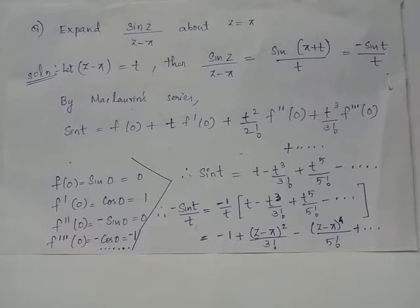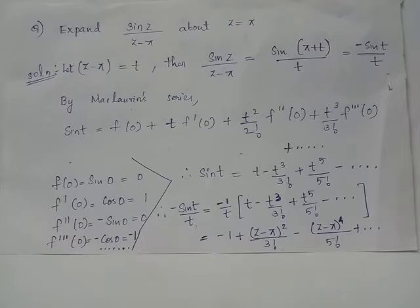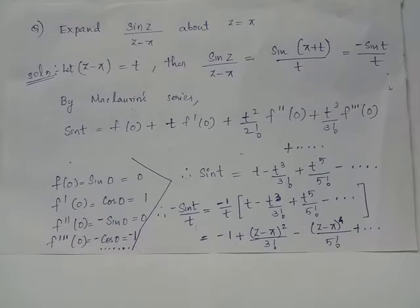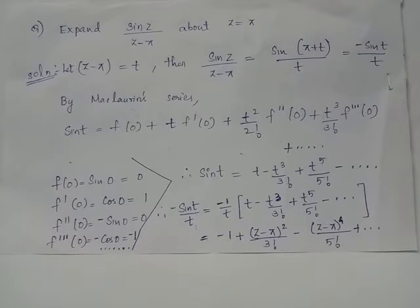For f(t) = sin(t): at t = 0, f(0) = sin(0) = 0. The derivative f'(t) = cos(t), so f'(0) = cos(0) = 1. Then f''(t) = -sin(t), so f''(0) = -sin(0) = 0. And f'''(t) = -cos(t), so f'''(0) = -cos(0) = -1.